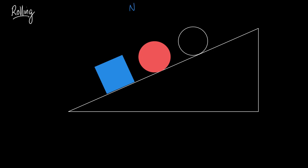They would all experience a normal force that is equal to mg cosine theta, where theta is the angle of the ramp. Correct?